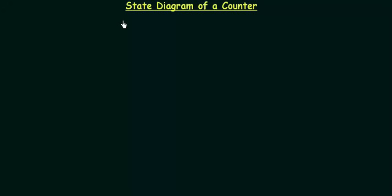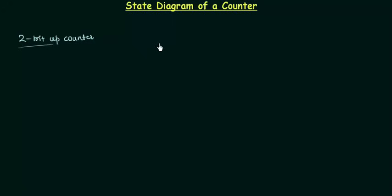In this presentation I will teach you how to draw the state diagram of a counter. For this purpose I will take a 2-bit up counter. This 2-bit is nothing but the output of the flip flops, and as it is 2-bit I have to use 2 flip flops, whether it be a JK flip flop or a T flip flop. The output of the first flip flop A is QA, and the output of B flip flop is QB. So QA and QB make my 2 bits.